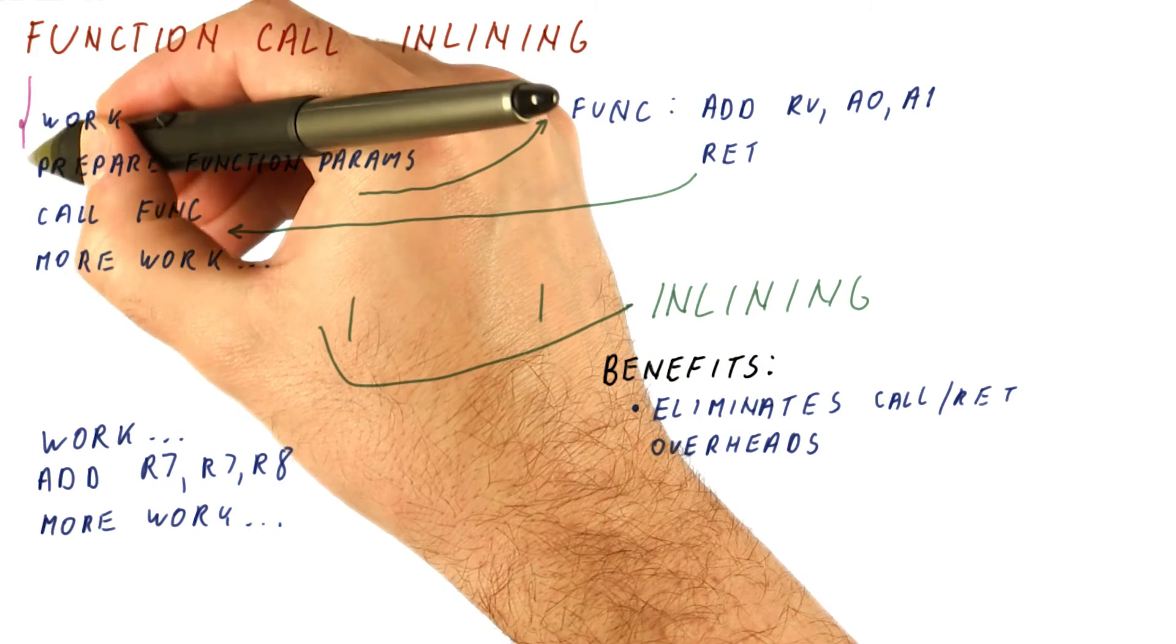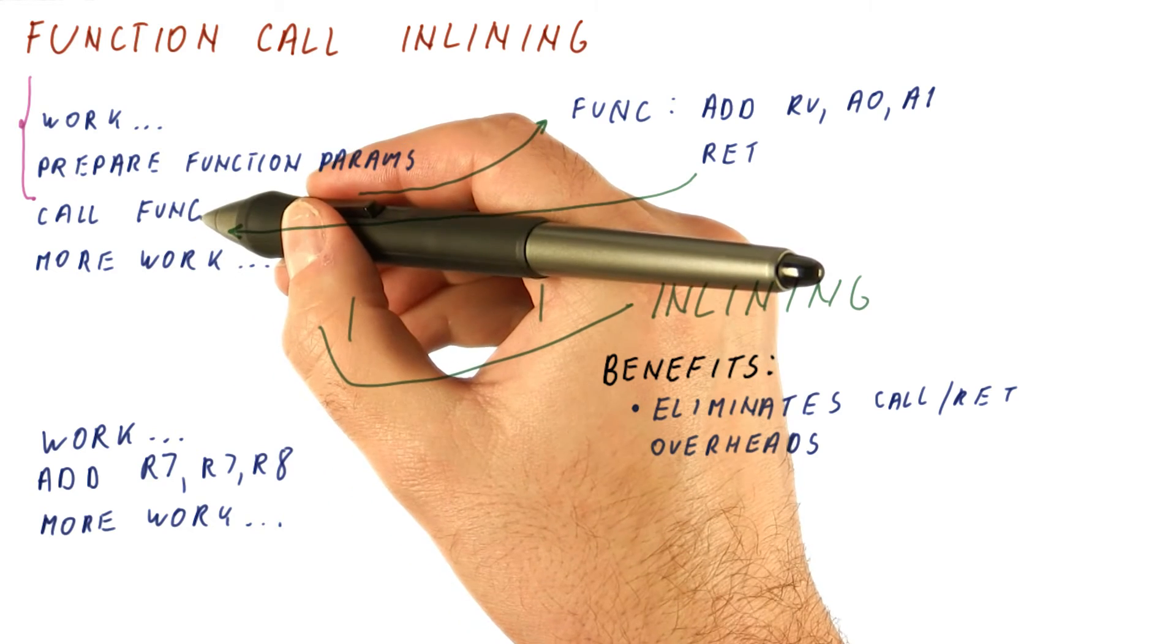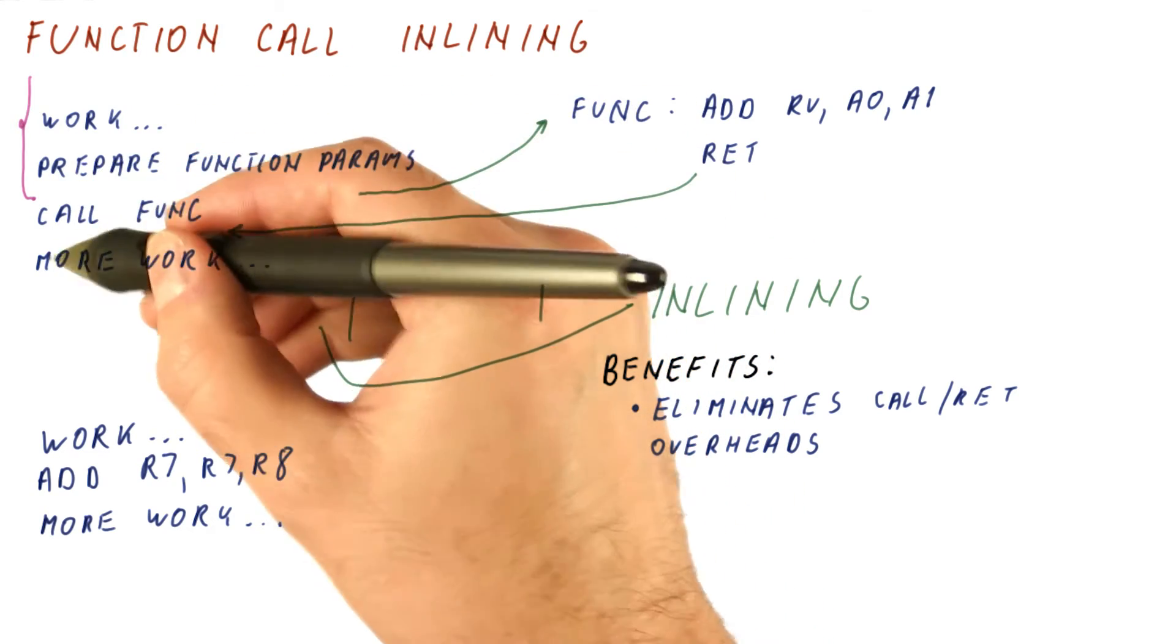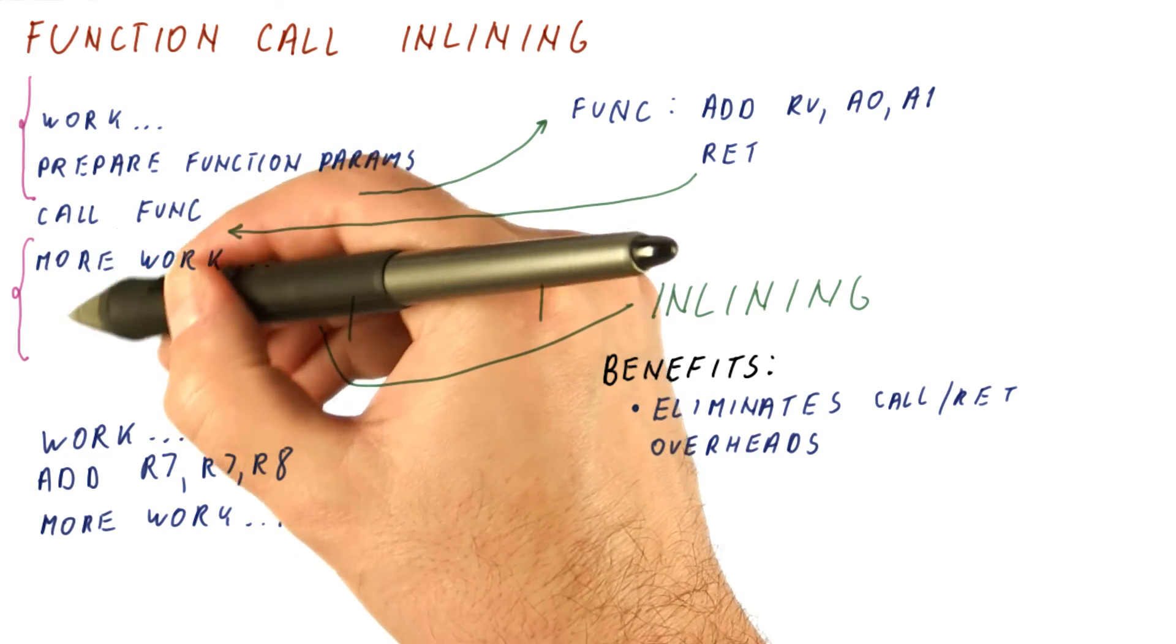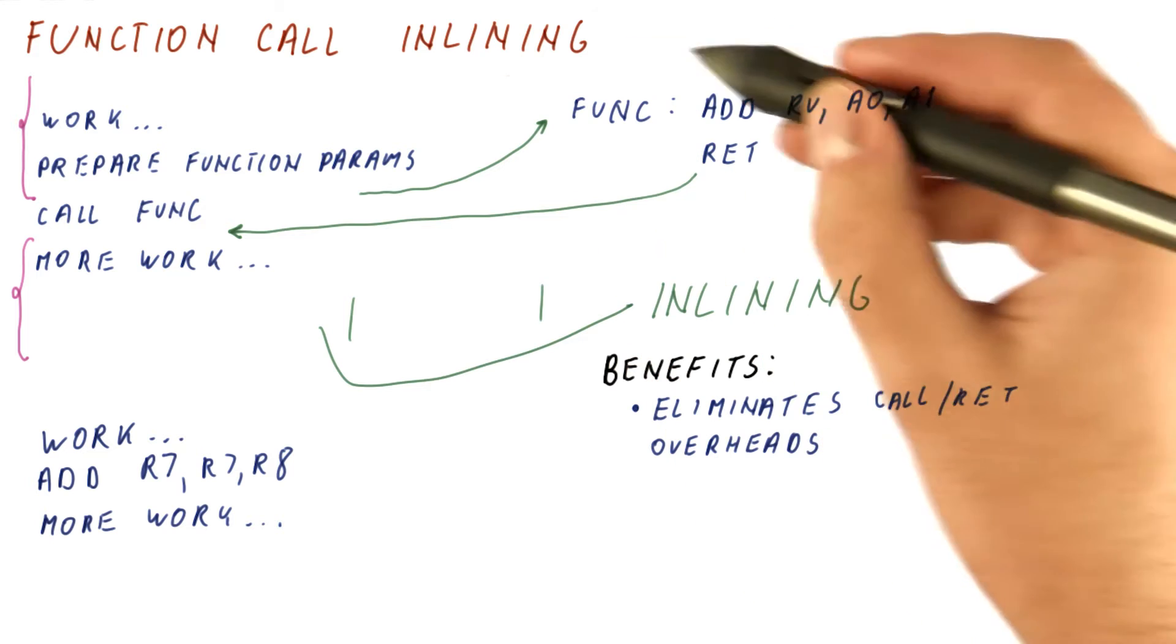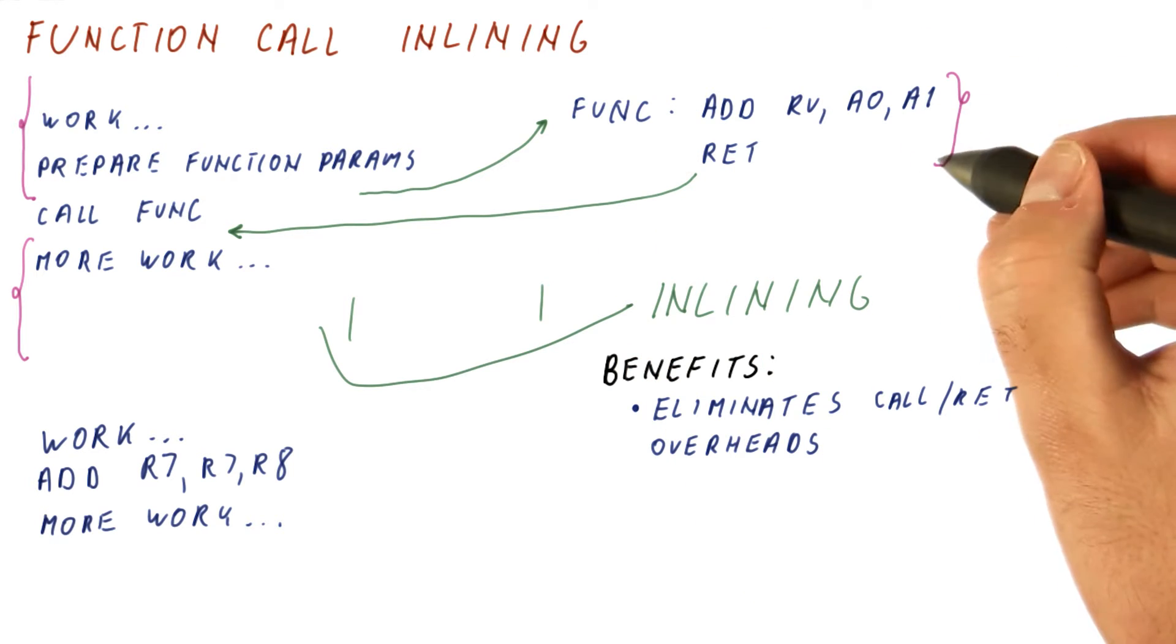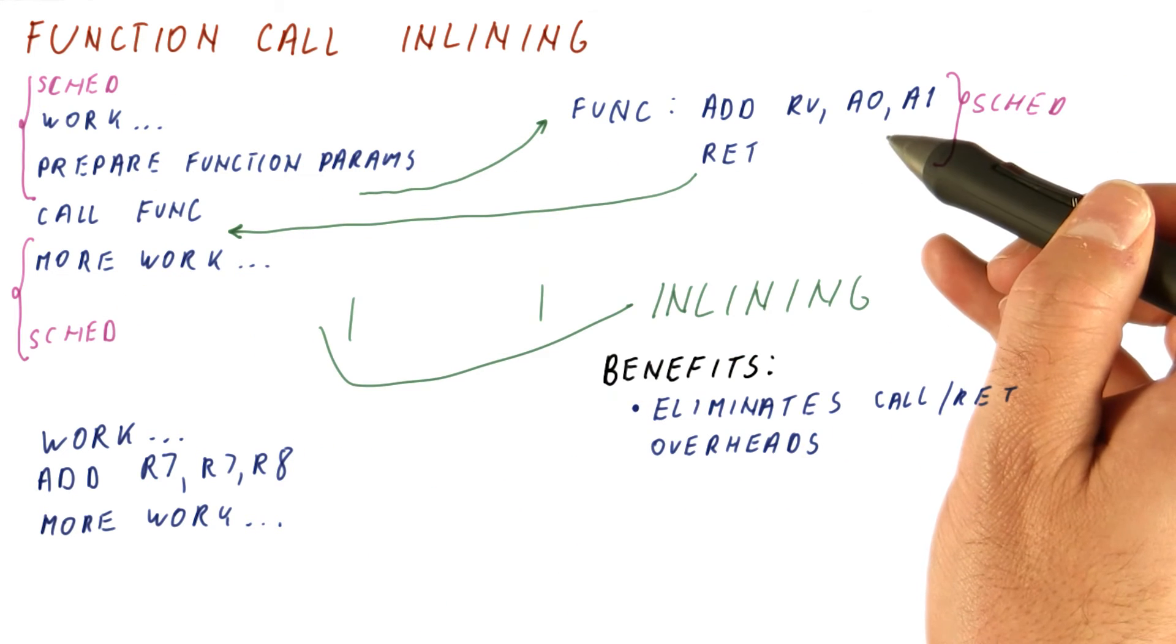Because really what we have is this is where we can do scheduling, and then we need to call the function. So these instructions cannot be moving around beyond this point. We can do scheduling here, but we cannot do much of this work before the call. And then the function itself can be scheduled, but we have to do it within this. We have three separate pieces of code, each of which can be scheduled, but we cannot,